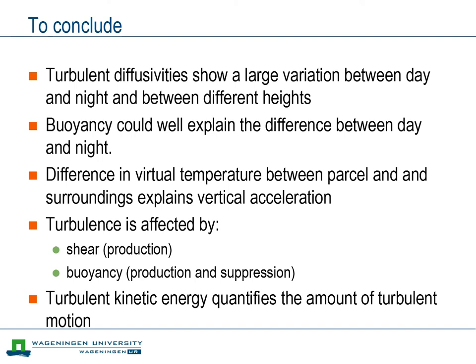Let's summarize what we have discussed. First, we defined the challenge of explaining the large variation of turbulent diffusivities as observed, simplified to understanding why the amount of turbulent mixing is variable. Next, we quantified how buoyancy accelerates air parcels that have a density differing from their surroundings. Then we qualitatively discussed shear as a mechanism to produce turbulence, and buoyancy as something that can both produce and suppress turbulence. Finally, we introduced turbulent kinetic energy as a measure for the amount of turbulent motion. Now it is time to quantify how shear and buoyancy affect turbulence.